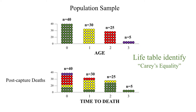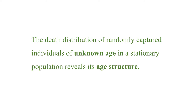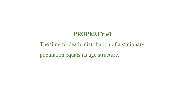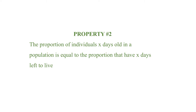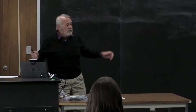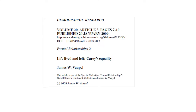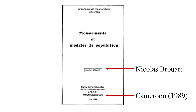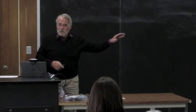The death distribution of randomly captured individuals of unknown age in a stationary population reveals its age structure. Property two: the proportion of individuals X days old in a stationary population equals the proportion with X days left to live. I discovered this empirically by playing around with the numbers until the mathematical relationship became clear. Vaupel and colleagues named it 'Carey's equality,' though it turned out Nicolas Brouard had discovered it 10 years earlier, buried in a Cameroon population handbook.